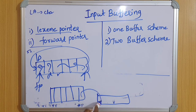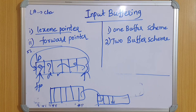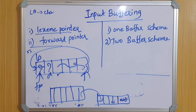In the two buffer scheme, we maintain two buffers. The first buffer stores values, and when it is full, the next values are stored in the second buffer. This is done to overcome overwriting in the one buffer scheme — by end of file we can reduce overloading and overwriting.